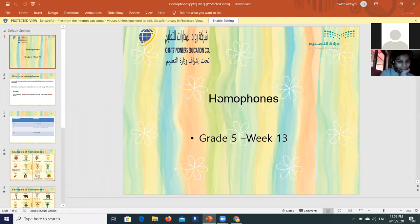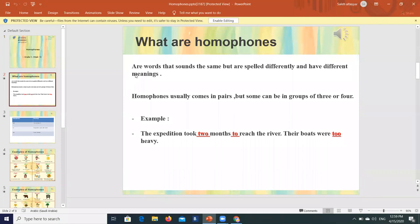Okay, hi, I'm Ryan. I'll teach you today about homophones. First thing: what are homophones? They are words that sound the same but are spelled differently and have different meanings. For example, like 'see' and 'sea' - I can see the sea. Homophones usually come in pairs, but some can be in groups of three or four.